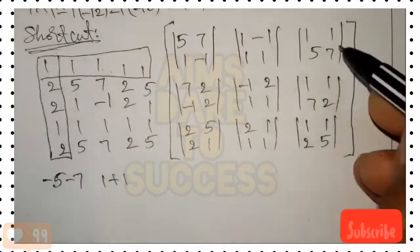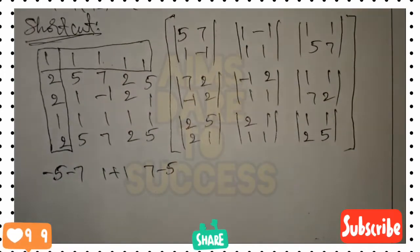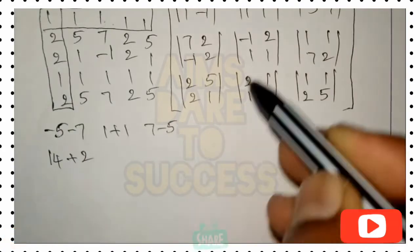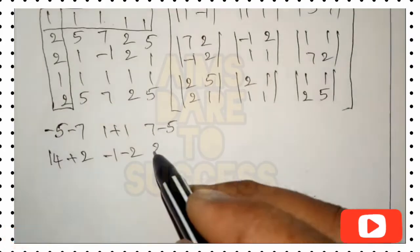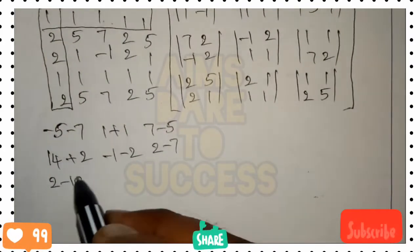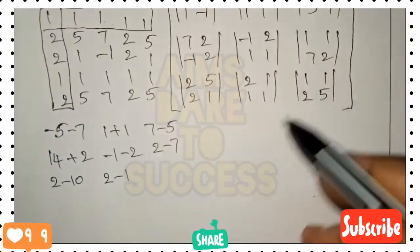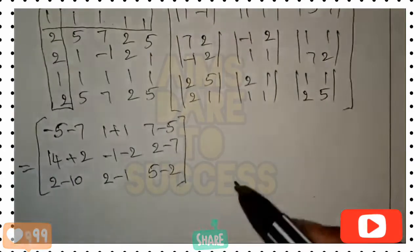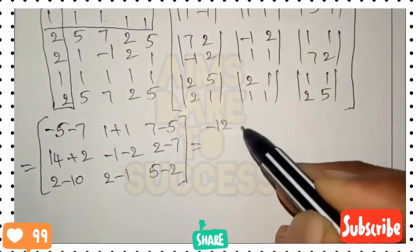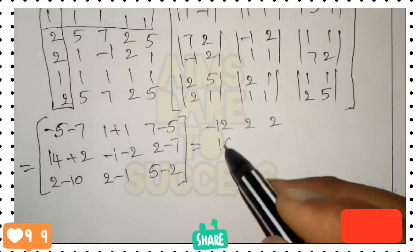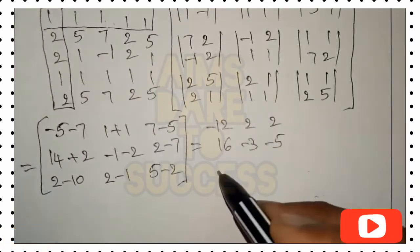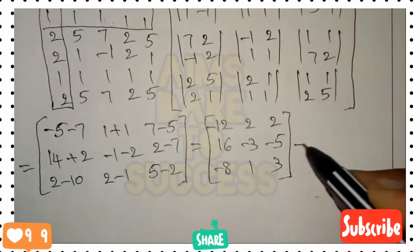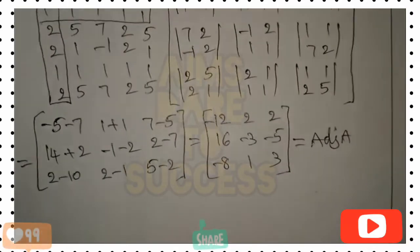Applying the ad minus bc formula with cofactor signs: first row: (-5-7) = -12, -(1+1) = -2 [shown as +2 after sign], (7-5) = 2. Second row: (14+2) = 16, -(2-7) = -(-5) shown as... and so on. The adjoint of A matrix comes out as: [-12  2  2 / 16 -3 -5 / -8  1  3].